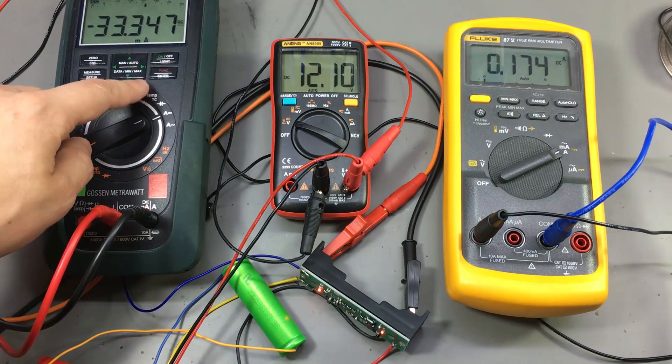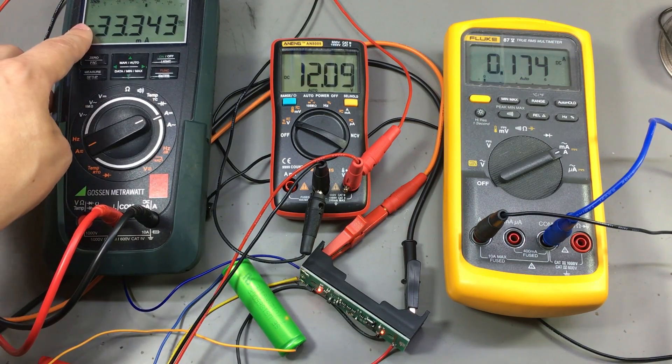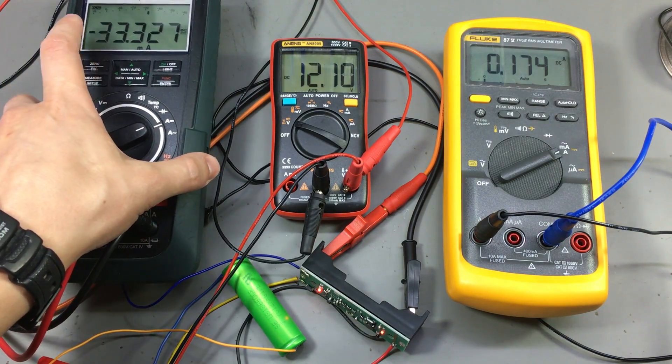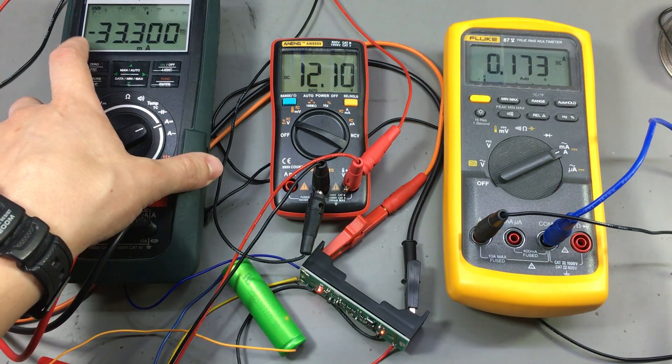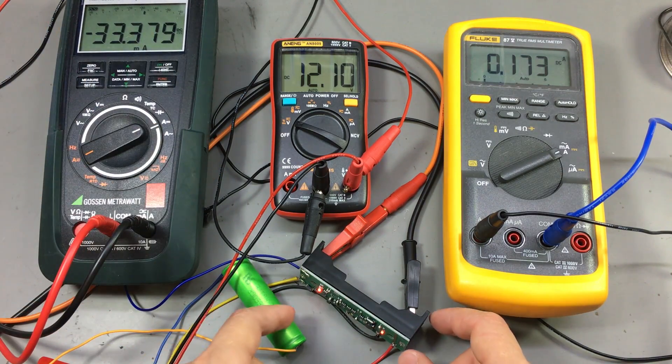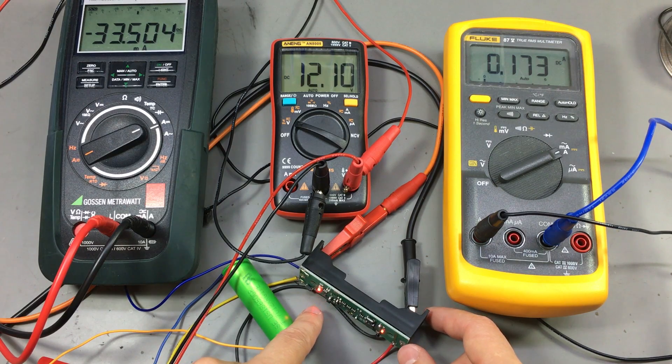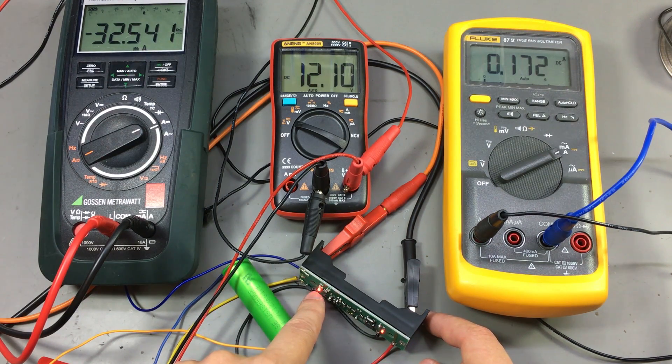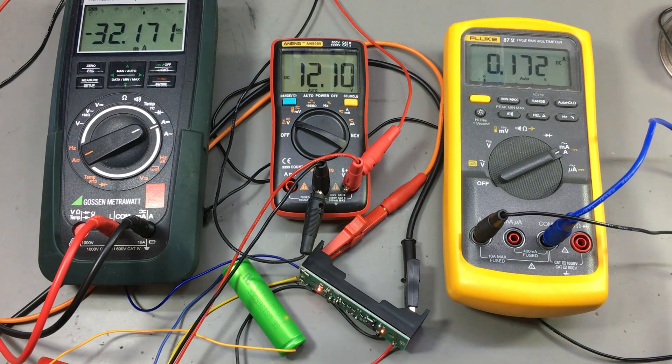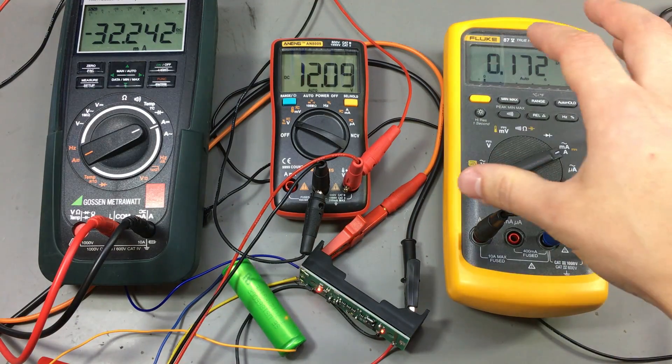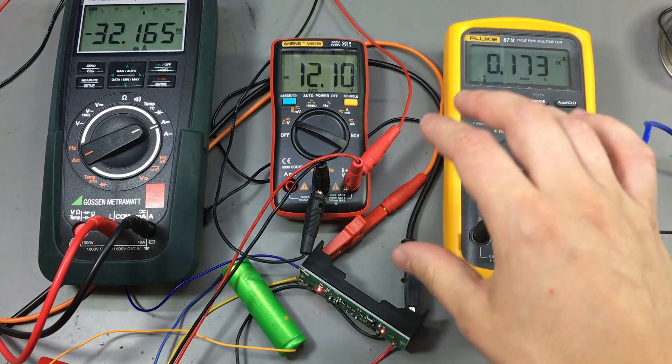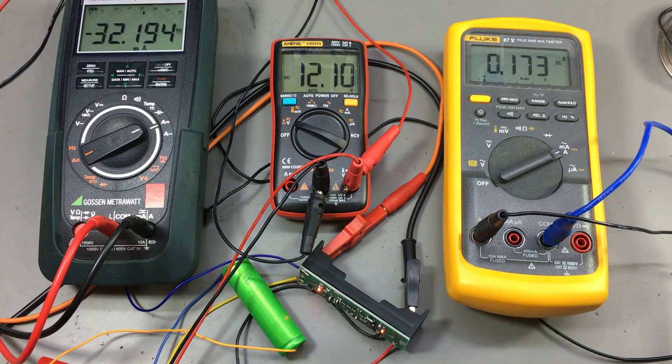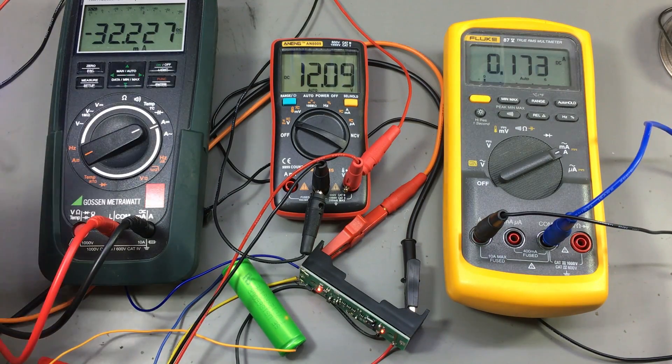So right now the bench power supply is turned on and we can see the current is flowing in from the bench power supply. And current is also flowing into the battery. When the value is negative on the Goson Metrahit, it means the current is flowing into the battery. So right now the battery management IC is charging the battery. We can see the red status LED means the battery is charging.